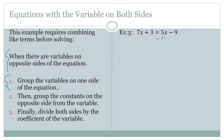Notice I selected the smaller, the 5x is smaller than the 7x, and I do that so that I avoid negative coefficients when possible. So now 7x minus 5x is 2x.